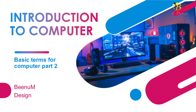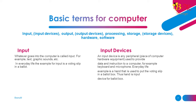Part 2: Basic Terms for Computer. Key terms include: Input, Input Devices, Output, Output Devices, Processing, Storage, Storage Devices, Hardware, and Software. Input: Whatever goes into the computer is called input. For example, text, graphics, sounds, etc.